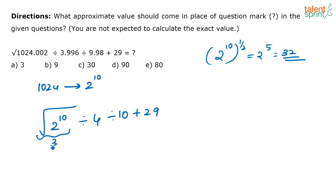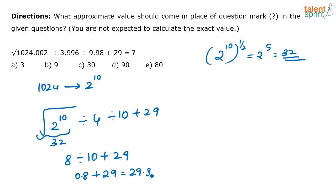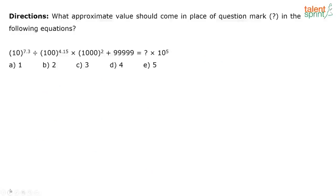32 divided by 4 is 8. So now you are left with 8 divided by 10 plus 29. What is 8 divided by 10? It is 0.8. So 0.8 plus 29 equals 29.8 — the closest option is 30. That is option C. Yes, 32 is the root of 1024. If you know that you can do it directly. Some may not know that, so you can use the powers method. This question looks difficult but is actually very easy — all the decimals disappear when you simplify.